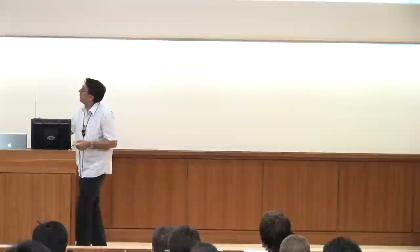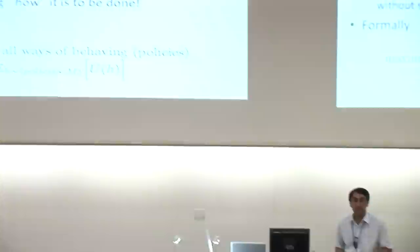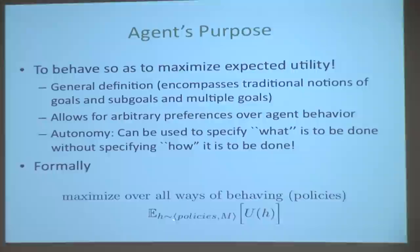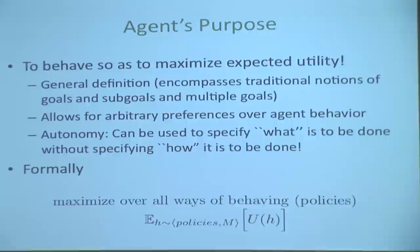The objective is to maximize expectation over all histories sampled — you fix a policy that generates a distribution over histories, which generates an expectation. You're trying to maximize this expectation. The notation: M is the environment, E is for expectation, H is history, U is utility. You maximize over all ways of behaving, which we'll think of as policies.